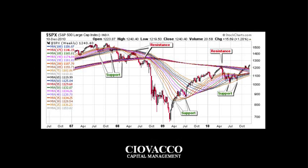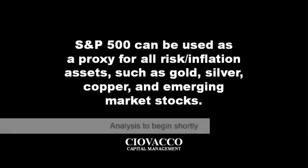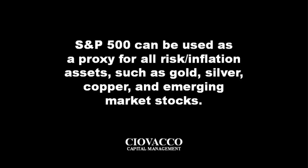In this video, we will focus on some key technical levels that have recently been exceeded in a bullish manner by the S&P 500. With correlations between asset classes remaining at high levels, we can use the S&P 500 as a relatively good proxy for all risk or inflation-friendly assets. This means if we are bullish relative to the S&P 500, we are most likely bullish relative to global stocks and commodities.